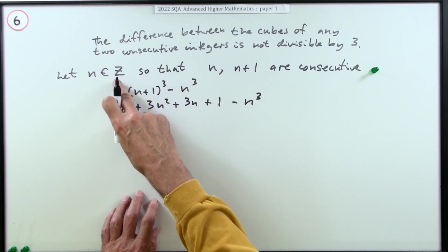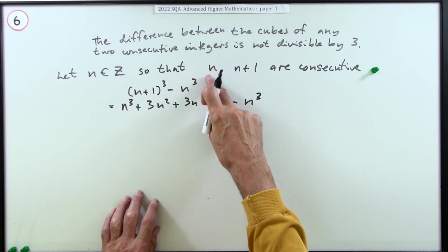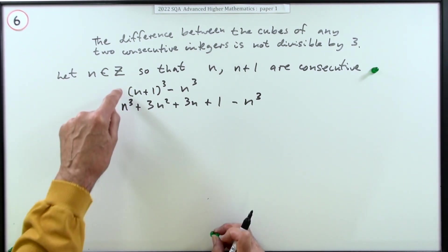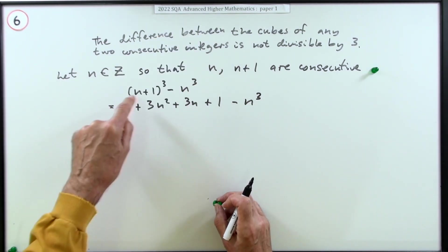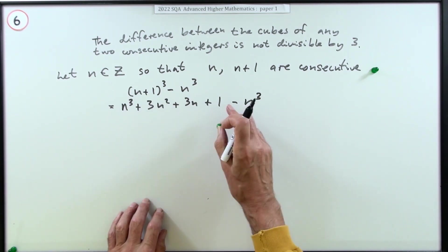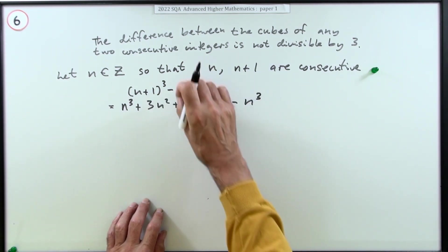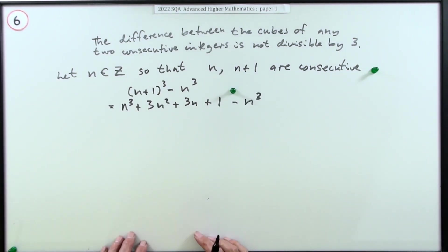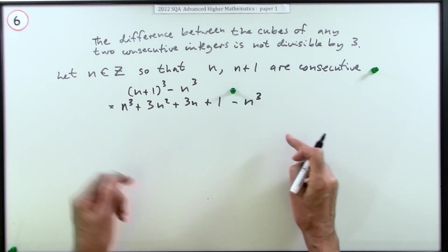I'm not sure how far you're meant to go. I would have thought you'd had to go as far as this, but I'll just put it somewhere in the middle. The last mark's for showing it's not divisible by three.